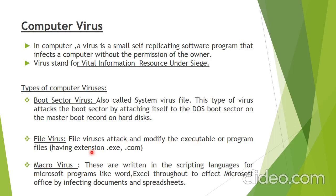The next type is file virus. File viruses attack and modify executable or program files. Programs are saved as .exe or .com files. This virus attacks our program files — the file created when we run a program. Next is macro virus. Macro viruses are written in the scripting language for Microsoft programs like Word and Excel. They attack Word or Excel files and create unnecessary characters between words or characters, damaging our spreadsheets or documents.